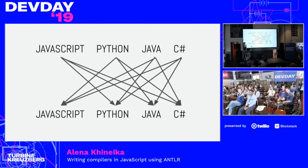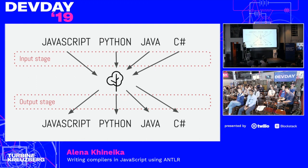The naive approach to support multiple input and output languages would be to map the syntax of each input language to the syntax of each output language directly. But you can see that the number of combinations grows enormously with every new language added. To reduce the problem, we needed to abstract it into separated input and output stages. In this case, the input language stage just needs to build a tree, and the output language stage just needs to read data from the tree.